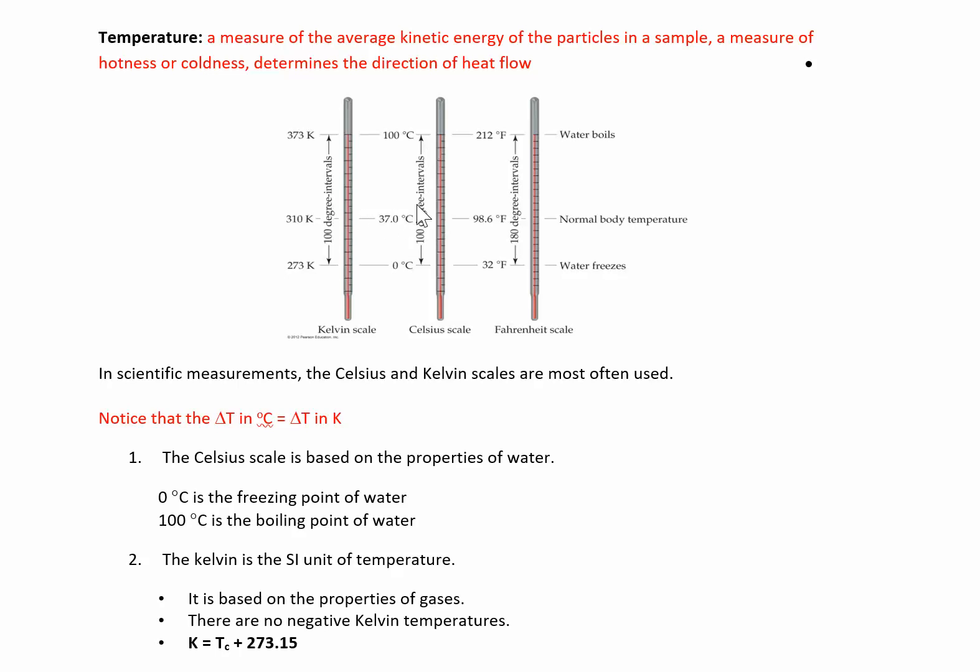When you get to Kelvin, all you're doing is adding 273 to any Celsius degree. Zero degrees Celsius is 273 Kelvin, 100 Celsius is 373 Kelvin. The difference again is 100 degrees between freezing and boiling in Kelvin and freezing and boiling in Celsius. The change in temperature in Celsius is the same as the change in temperature in Kelvin. Kelvin is just shifted higher on the scale by 273.